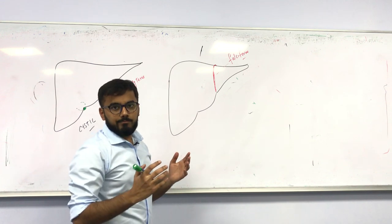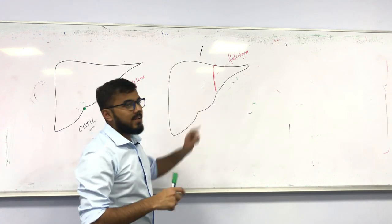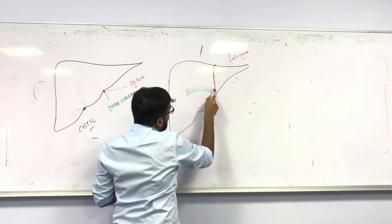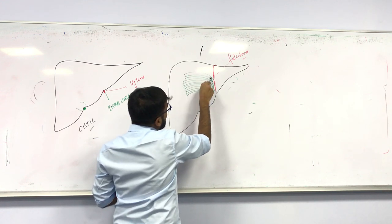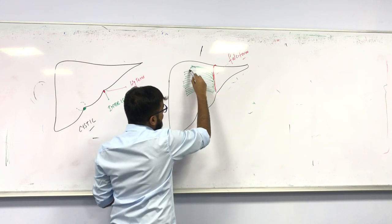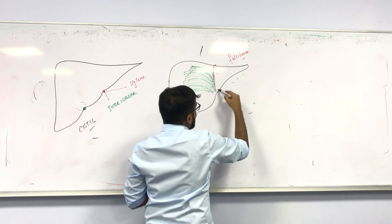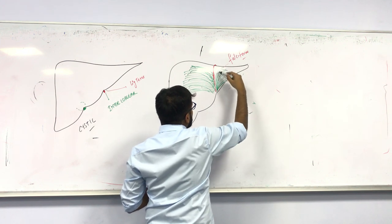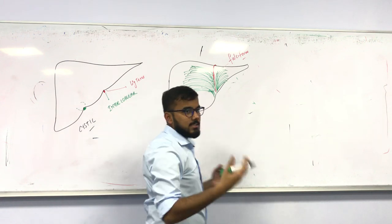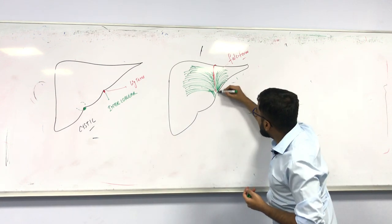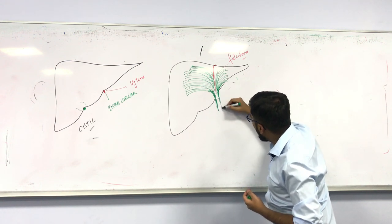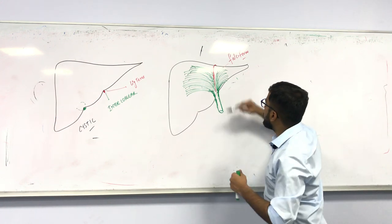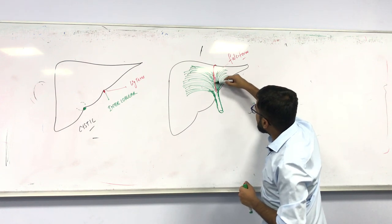The peritoneum folds over the falciform ligament, stretching on either side of it. These folds of peritoneum increase in number and come together to form a narrow sheath.